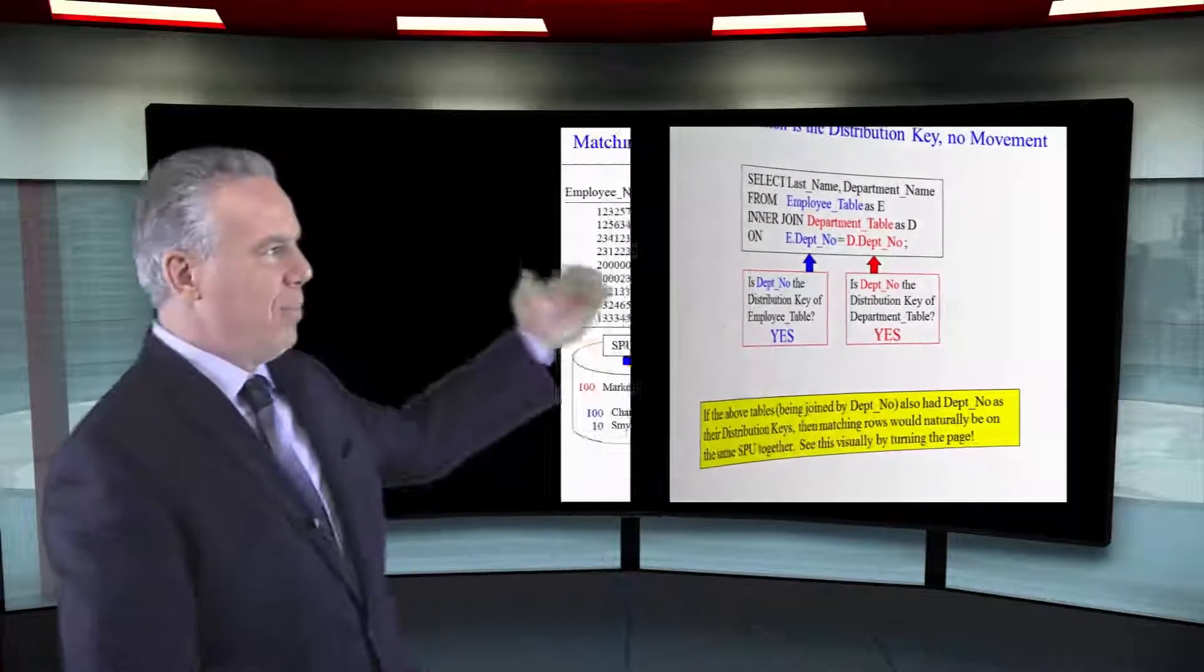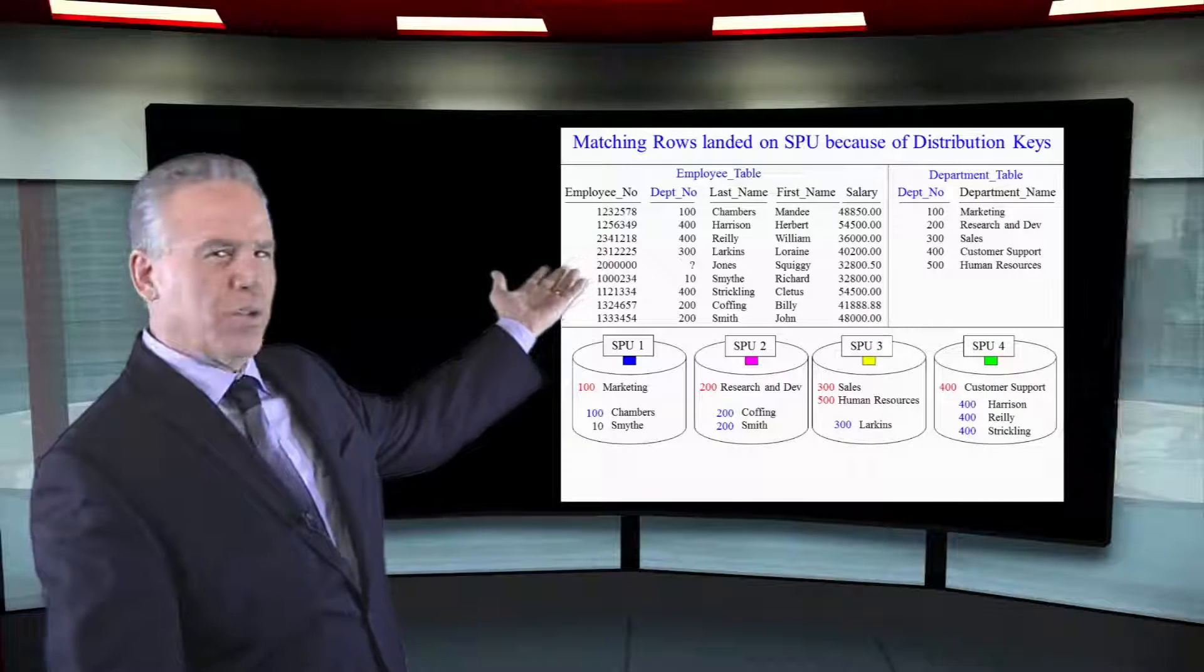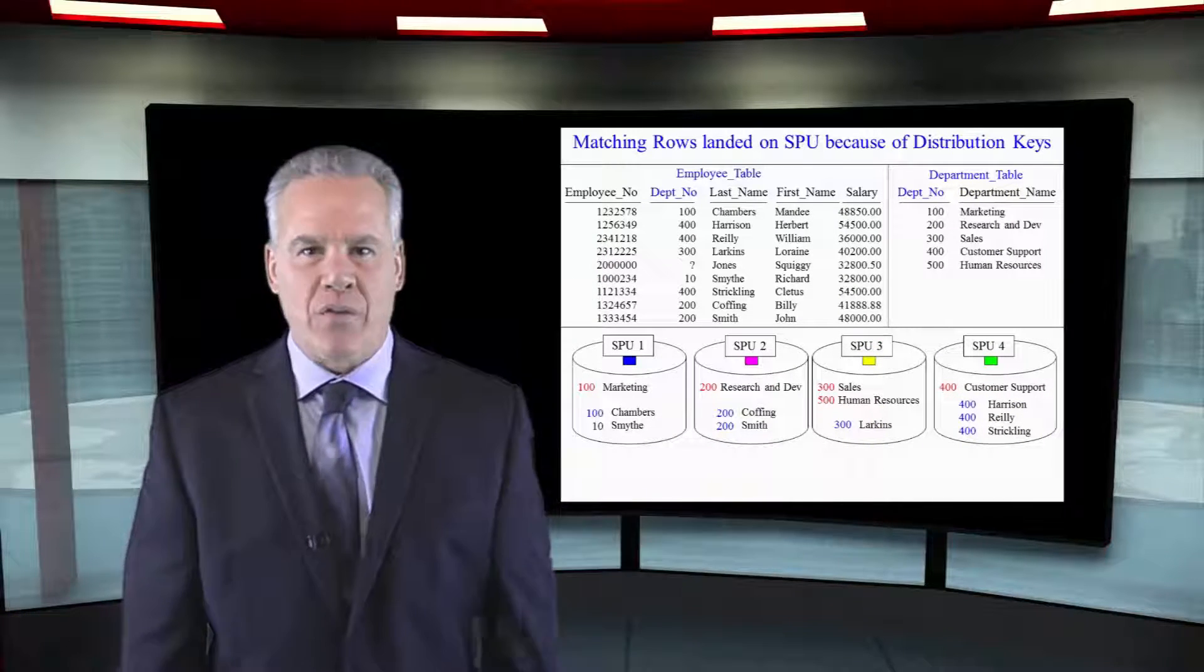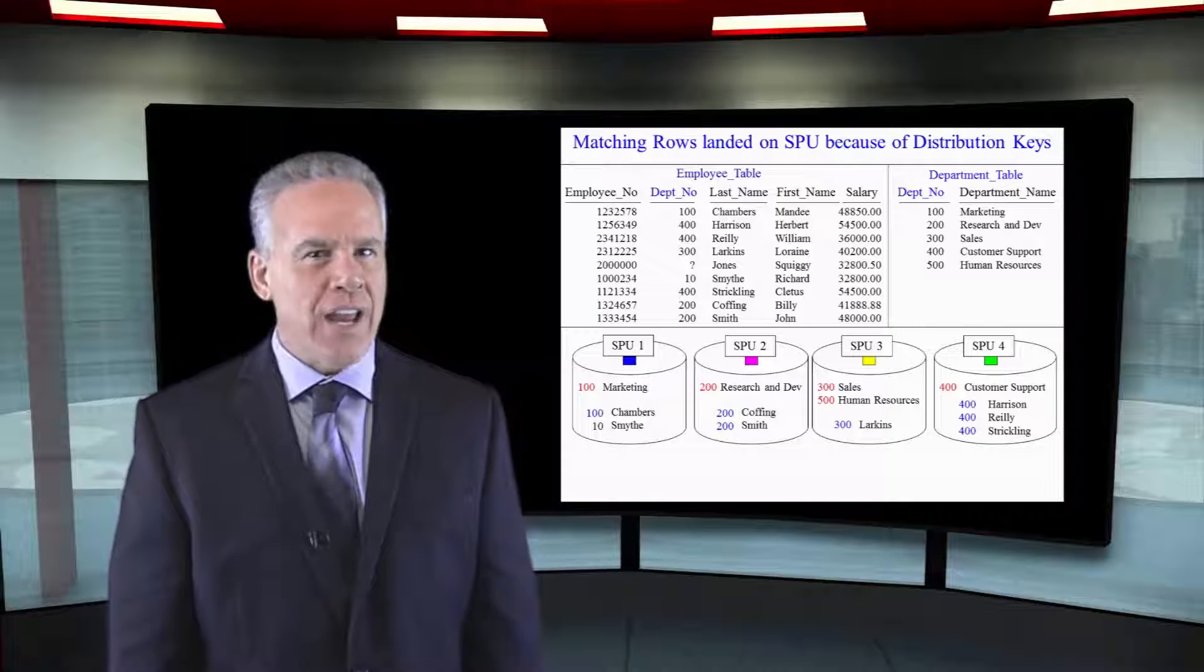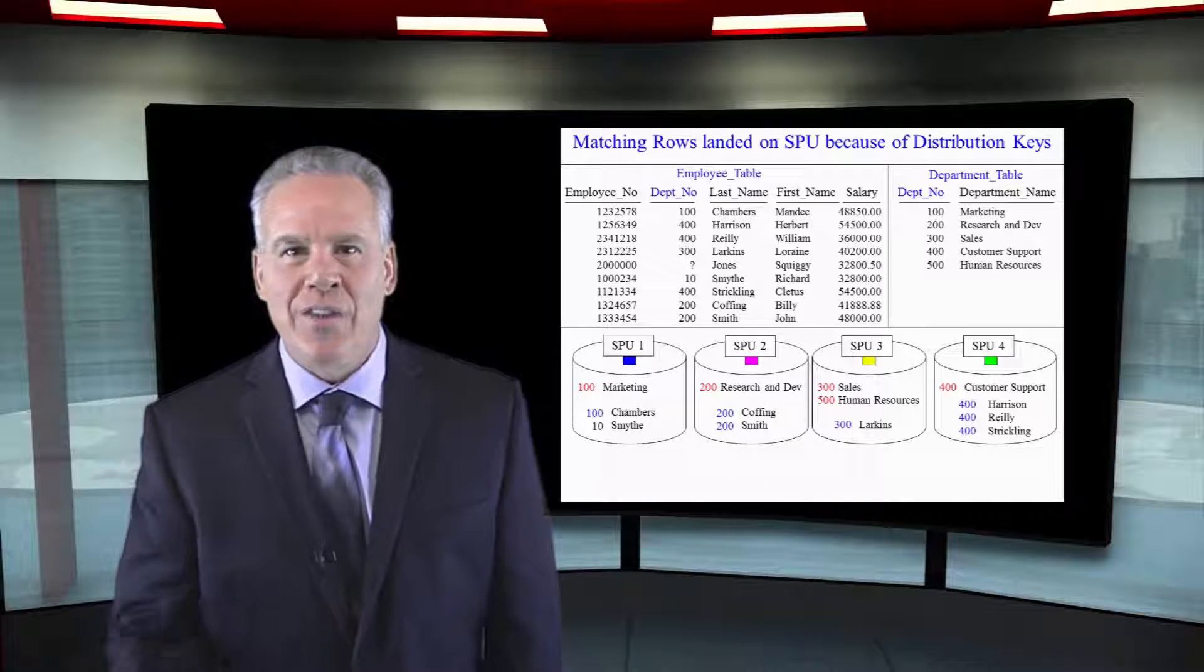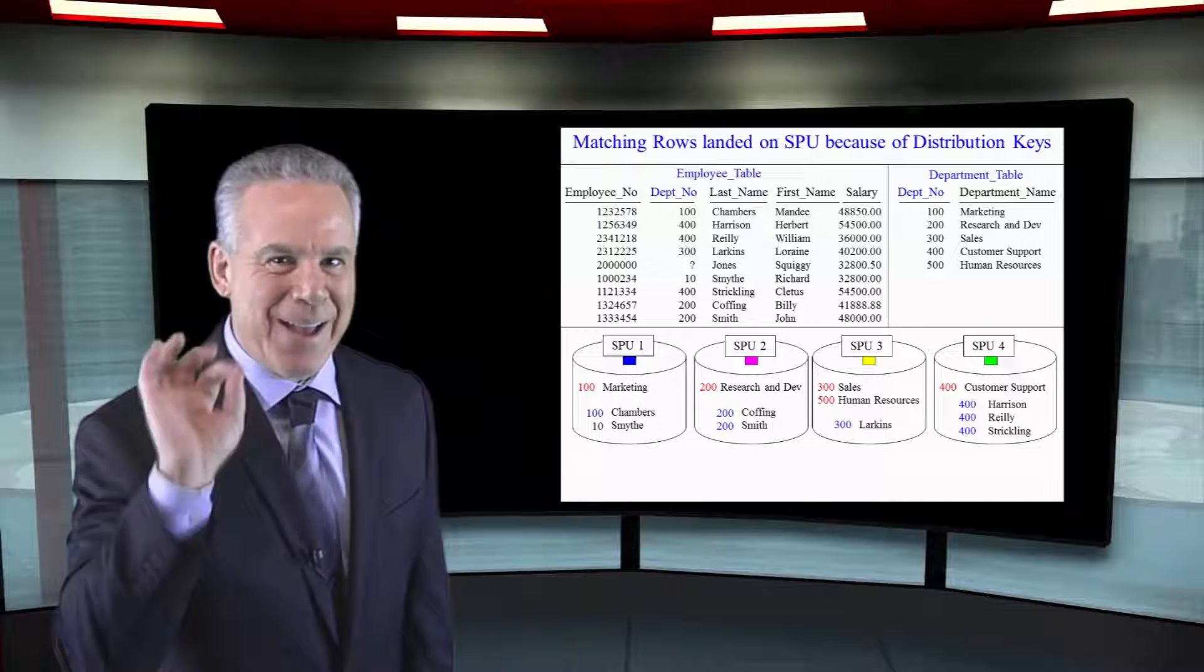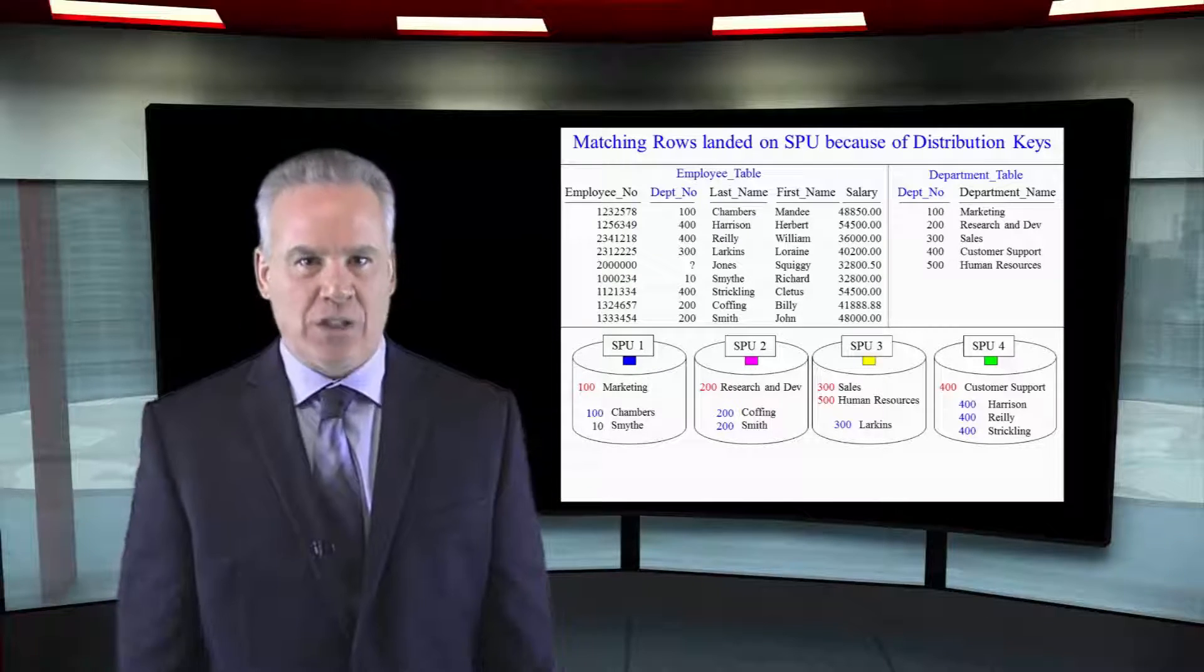At the top you can see both of the tables, don't worry too much about that. I want you to notice the actual SPUs down there. How are both of these tables distributed? They were both distributed on department number, Depno is the name. Take a look at this data.